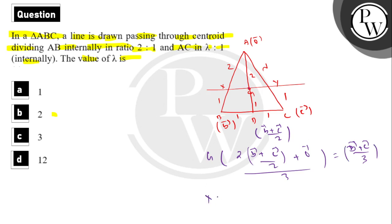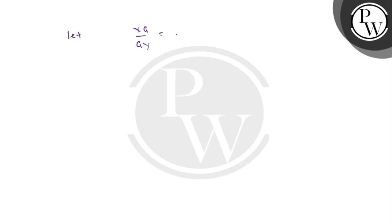Now let X be the point on AB dividing it in ratio 2:1. So position vector of X = 2·vector B / 3. And let Y be the point on AC dividing it in ratio λ:1. So position vector of Y = λ·vector C / (λ + 1).